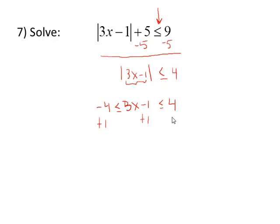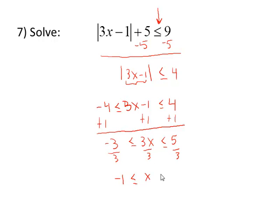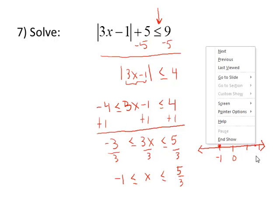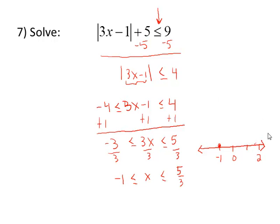To solve this inequality, we want to isolate x in the interior branch, so we'll add 1 to all three pieces. Negative 3 less than or equal to 3x less than or equal to 5. Divide through by 3, and we have negative 1 less than or equal to x less than or equal to 5 thirds. On a number line, negative 1 is on the left side — we're going to put a closed circle there. 5 thirds is 1 and 2 thirds, so that'll be a little before 2, and we shade between those two values. In interval notation, that's bracket, negative 1, comma, 5 thirds, bracket. We use brackets when we have an endpoint that's included in the solution set.